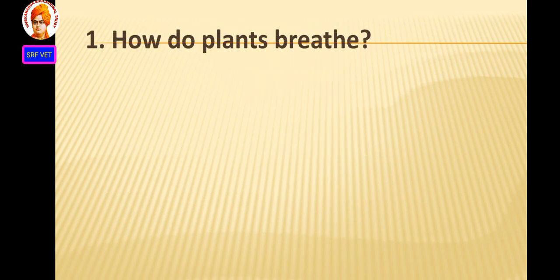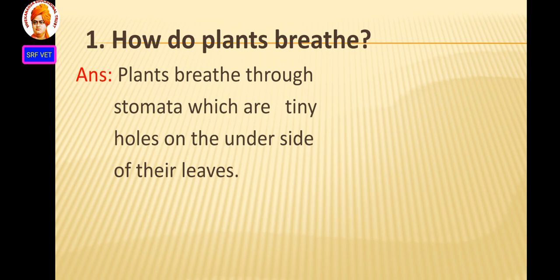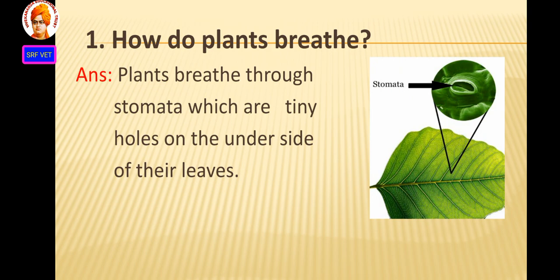First question: How do plants breathe? Plants breathe through stomata, which are tiny holes on the underside of their leaves. Tiny holes means small holes. So once again to repeat: plants breathe through stomata, which are tiny holes on the underside of their leaves.